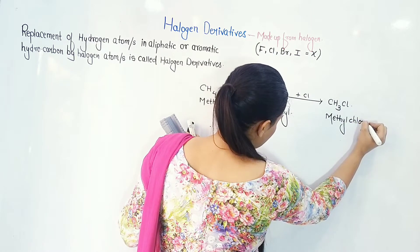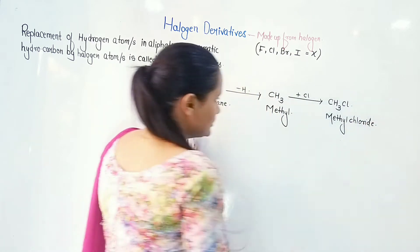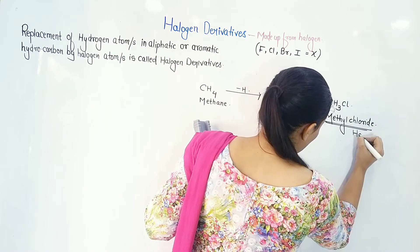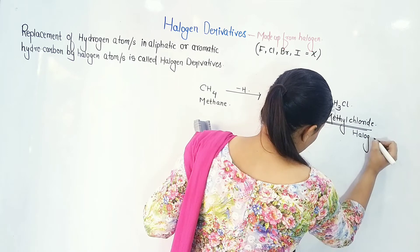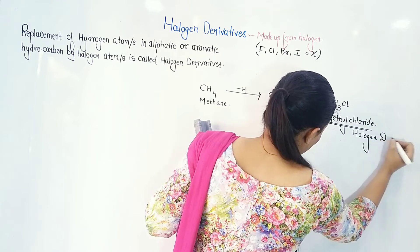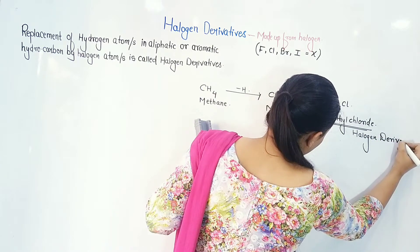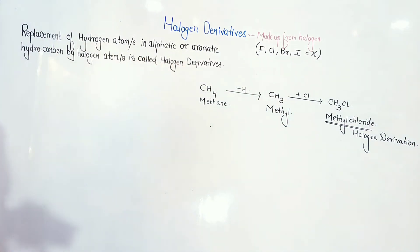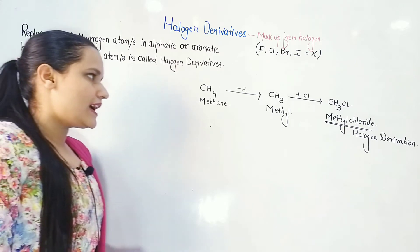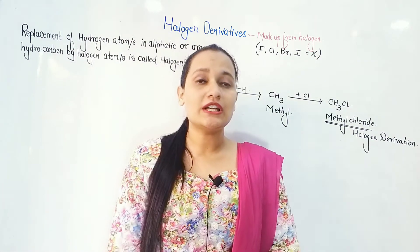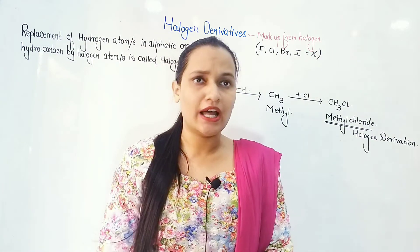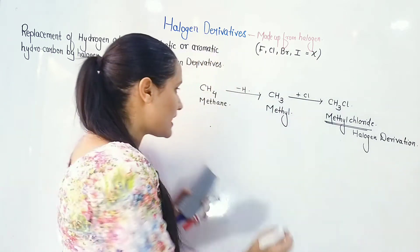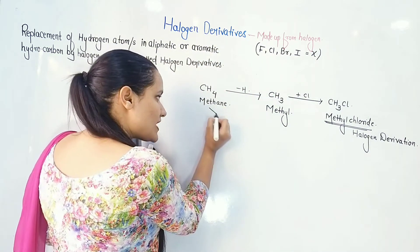CH3Cl — we are going to call it methyl chloride. So this methyl chloride is a halogen derivative because it is derived from halogen and it is made up from halogen. Throughout the chapter, what we have to do is replace hydrogen with halogen — remove one hydrogen and put one halogen in its place.